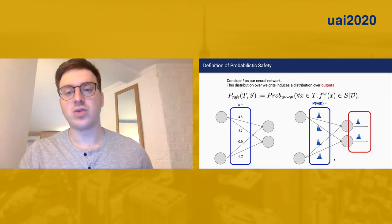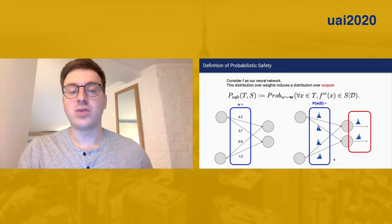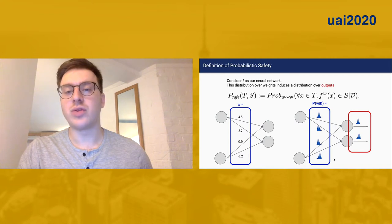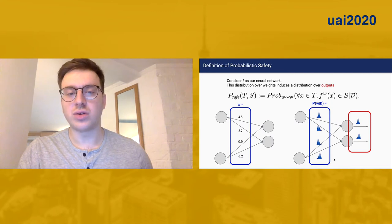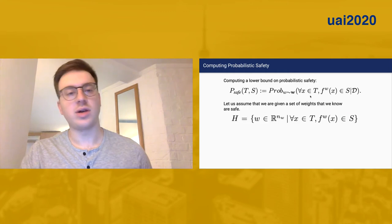We have to change our standard notion of safety to one that's probabilistic. So here we have the standard notion of safety, so that for every X inside of the allowed set of manipulations, we want that the function maps into the safe set. But because this function is no longer deterministic, we have some probability that this holds rather than it being binary, holding or not.